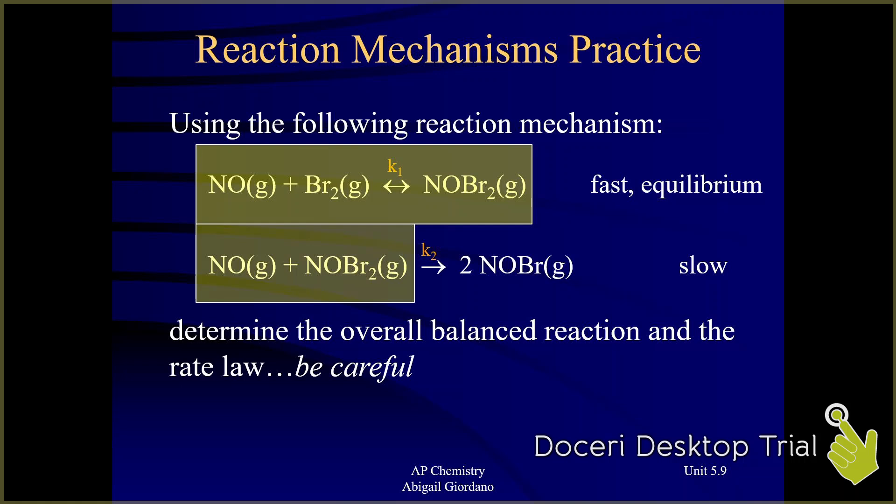And I can see that there is. NOBr2 is an intermediate. It's found on the product side of the first elementary step, the reactant side of the next one. I can cancel it out.